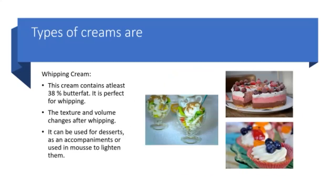Whipping cream should contain at least 38% of butter fat. As the name suggests, it is perfect for whipping. The texture and volume of the cream changes after whipping. It can be used for desserts or as an accompaniment, or it is used in mousse to lighten them.